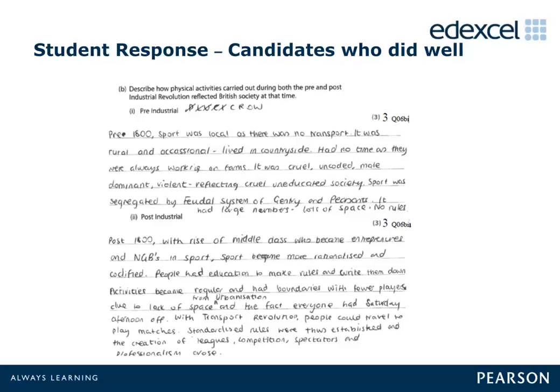Linking words were helpful for the examiner. In the first example, the candidate scores all three marks for question 6b1. They describe the fact that lack of transport caused the activities to be localised, they were rural as people lived in the countryside, and cruel as society was cruel at the time. A further three marks were awarded for question 6b2, where the learner correctly described that there was education to make rules and write them down, making a link that the populace could now read them, they had boundaries with fewer players due to lack of space, and that they became regular as everyone had Saturday afternoon off.